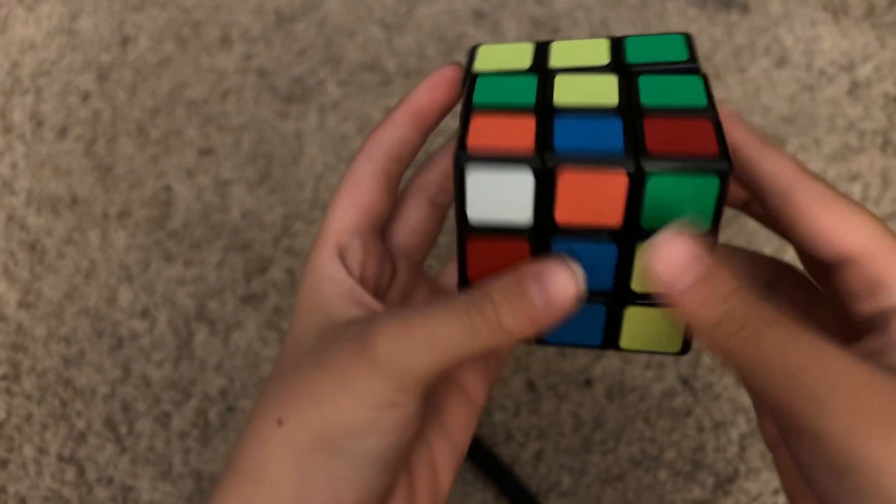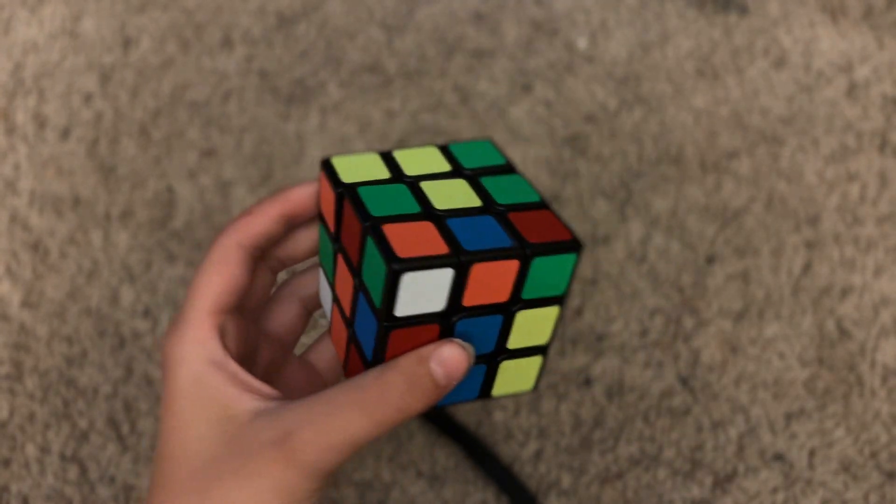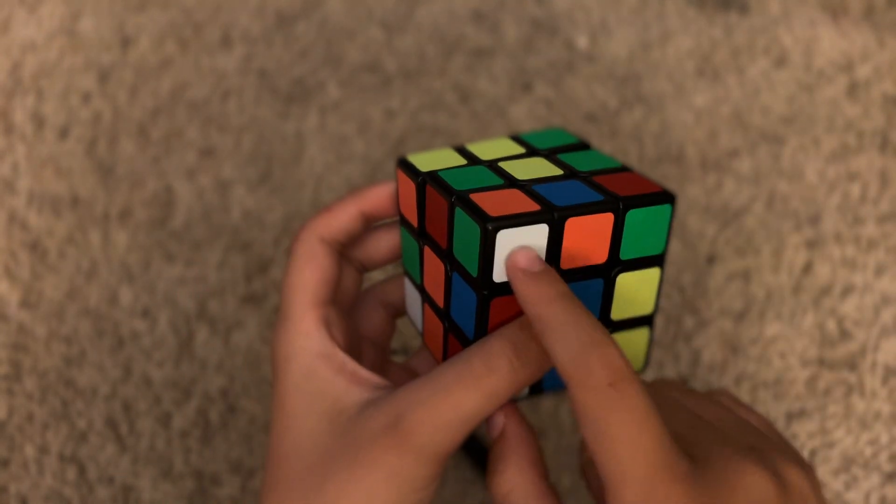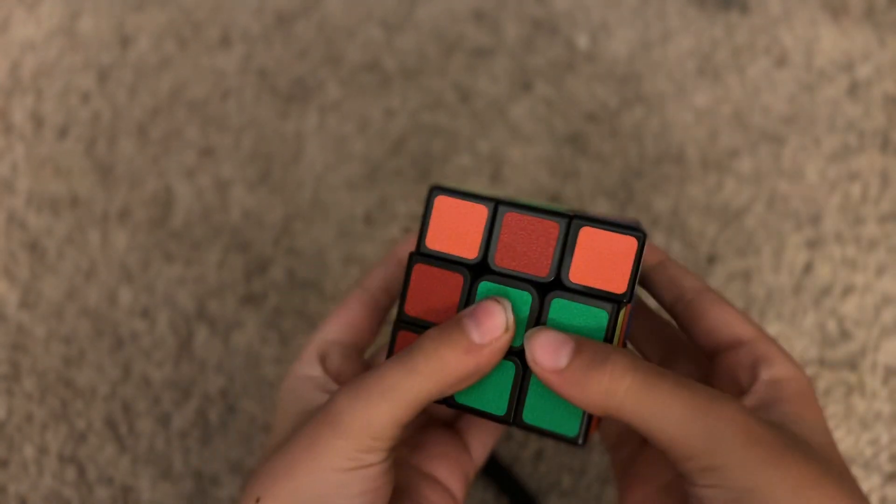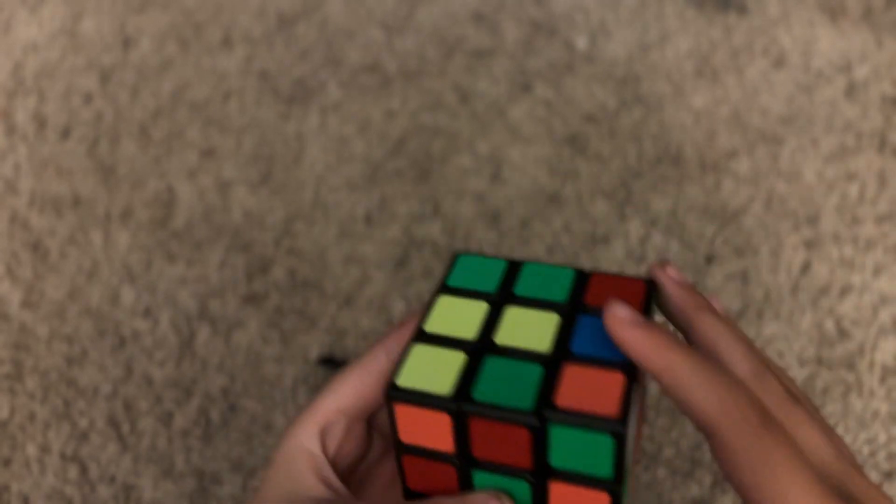So now that we have the CROSS matching with the centers, what we want to do is find a white corner, like this one. White, orange, and green. And instead of inserting it like this and then doing second layer,